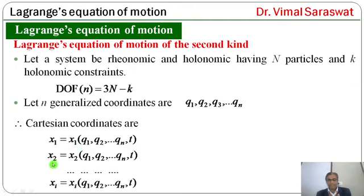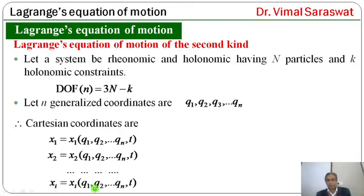The second Cartesian coordinate is x2, which is also a function of q and t. In the same way, the i-th Cartesian coordinate xi is a function of q and t.